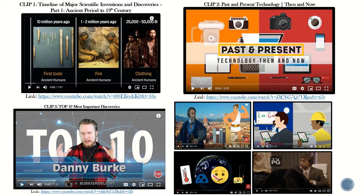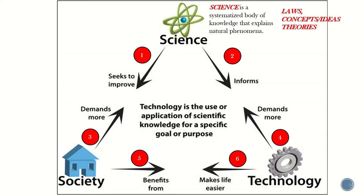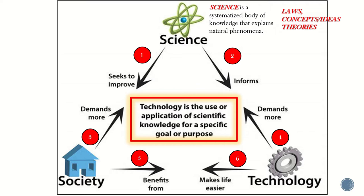In this subject we will mainly discuss the interaction of three main terms: science, technology, and society. When you say science, it is a systematized body of knowledge that explains natural phenomena. It consists of laws, concepts, ideas, theories, and the application of its laws.